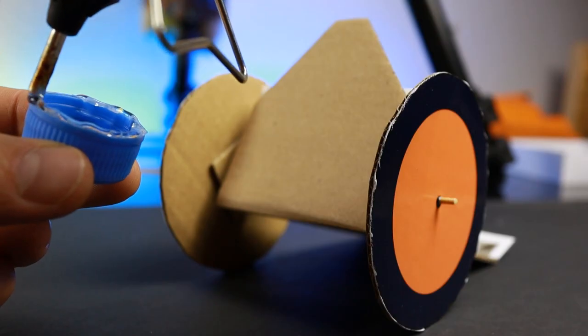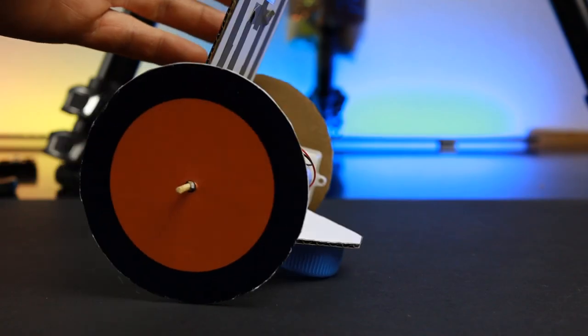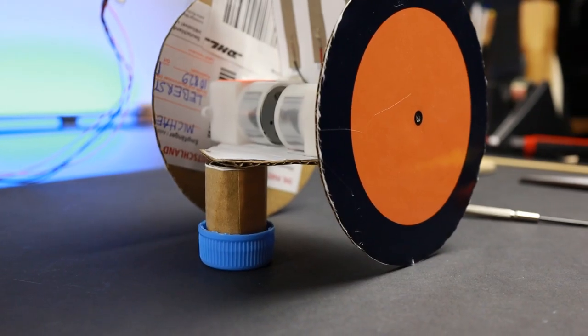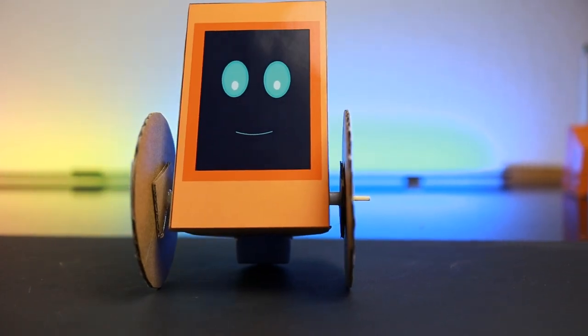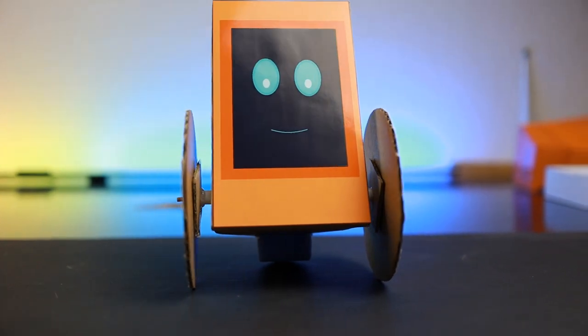To stabilize your robot, attach a bottle cap. This acts as a third wheel. If you use the big wheels, use a rolled up piece of cardboard to level it. Glue the robot's design template to the front and you're done.